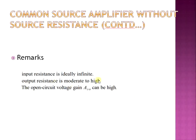The conclusion for the CS amplifier without source resistance is that it mainly suffers from poor high-frequency performance. This is why it is considered a poor-performing common source amplifier — especially because it lacks a source resistance. We will look at how to compensate these drawbacks by including a source resistance connected to the source terminal.